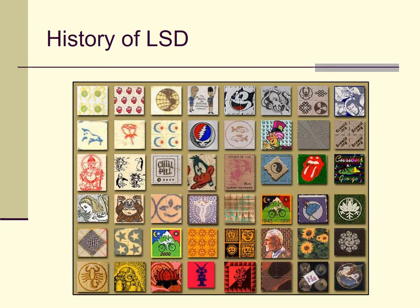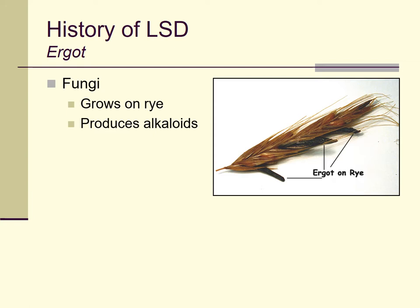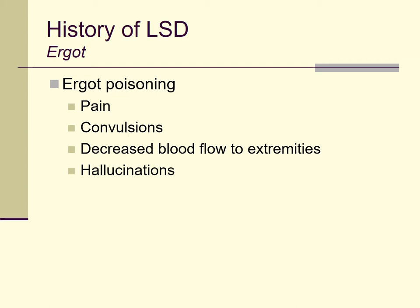The history of LSD, like some other drugs, begins with a natural substance — not a plant this time, but a fungus called ergot. Ergot grows on a variety of grains naturally, especially if those grains are stored in damp conditions. The fungus has a number of different alkaloids in it, including LSD. We know about this from historical records of ergot poisoning, which occurred throughout history when people would store grain in conditions that got too damp. Ergot would grow, people would unknowingly bake it into bread and eat it, and suffer symptoms including pain, convulsions, decreased blood flow to the extremities, and even hallucinations.